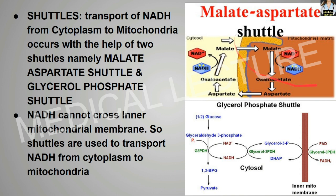As you can see in this figure, the malate-aspartate shuttle: aspartate converts into oxaloacetate, and this oxaloacetate converts into malate by taking the H+ from the NADH. This H+ is taken along with this malate — the oxaloacetate takes this H+ and converts into malate. This malate actually enters inside the inner mitochondrial membrane, into the mitochondrial matrix, because NADH cannot cross the inner mitochondrial membrane.